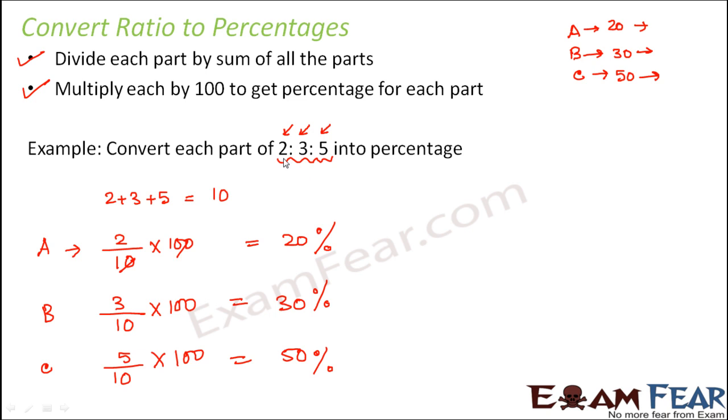So total number of parts would be all the parts, the sum of all the parts of A, B, and C. So A scored 2 out of 10, B scored 3 out of 10, and C scored 5 out of 10. Now that does not literally mean that they scored 5 out of 10, because we do not even know what is the total marks of the exam. So this just tells that if 10 is the total marks, in that case A scored 2, B scored 3, and C scored 5.